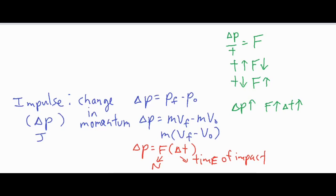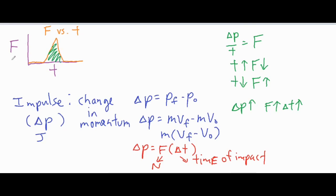There's also a graphical way to look at impulse. On a force versus time graph, when an object receives an impact, the force might spike and then drop back down. The area beneath that curve gives you the impulse. This makes sense because force times time equals impulse. So you'd find the area — using one-half base times height if it's triangular, or whatever shape it is — and that area equals your delta p.